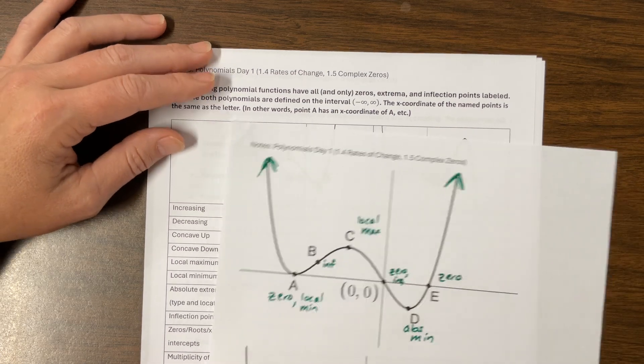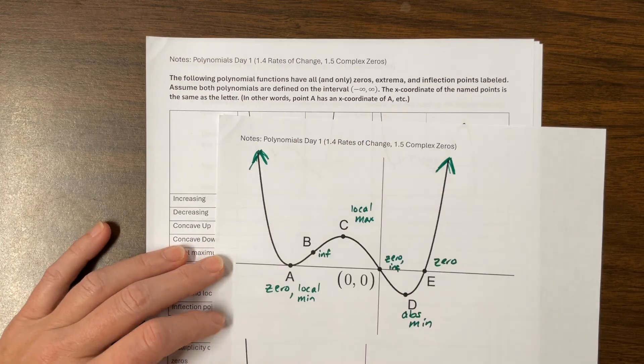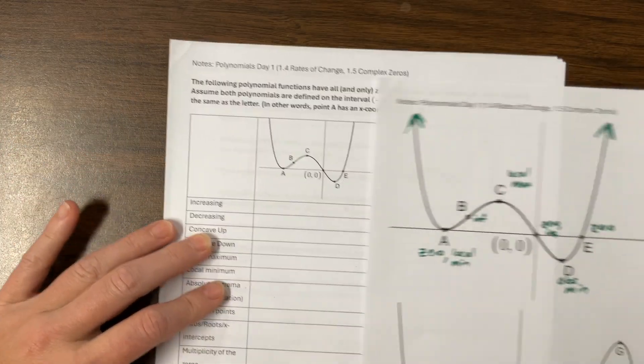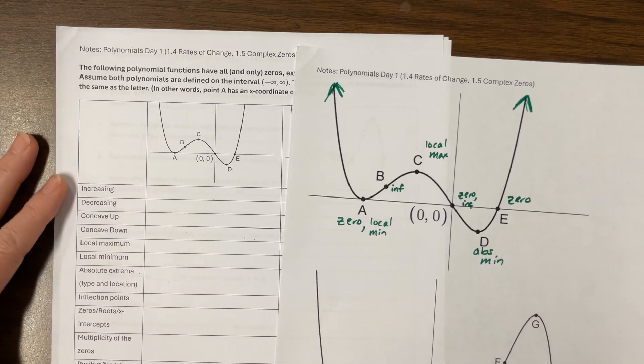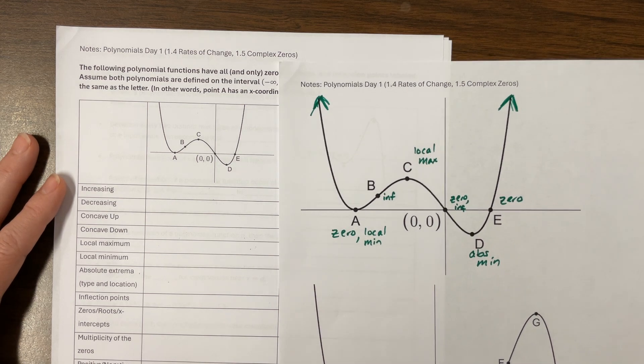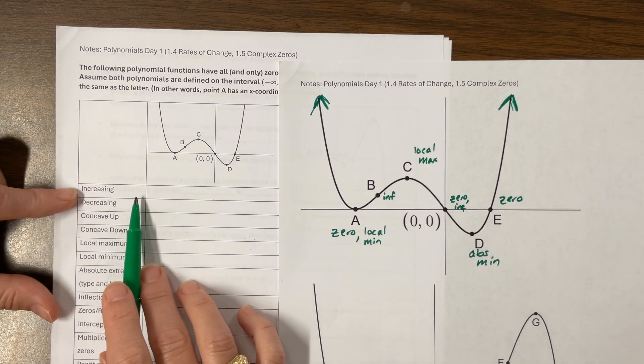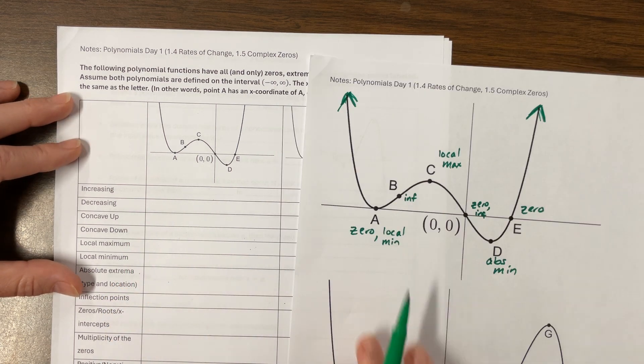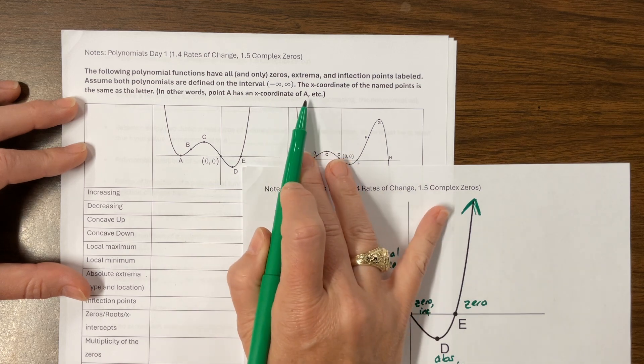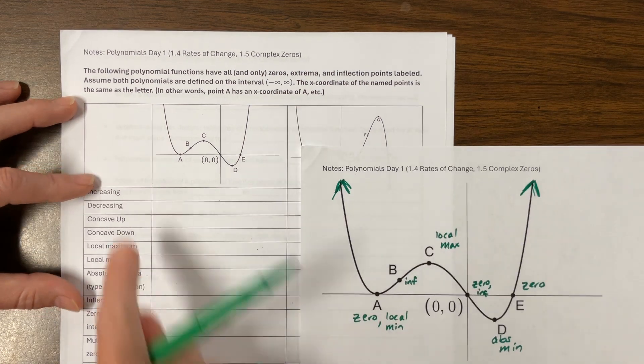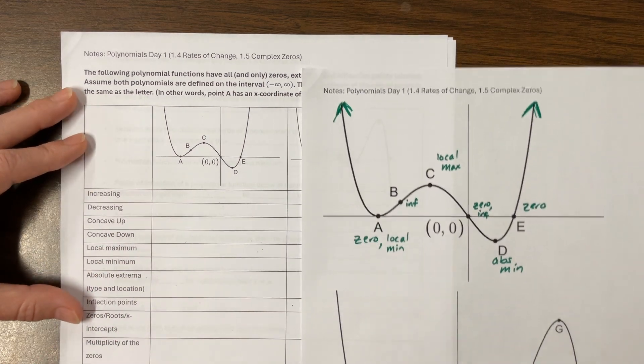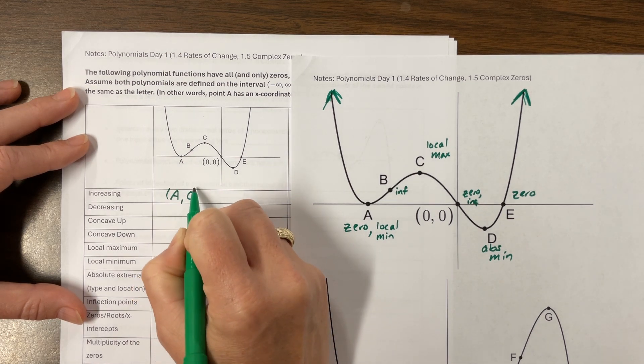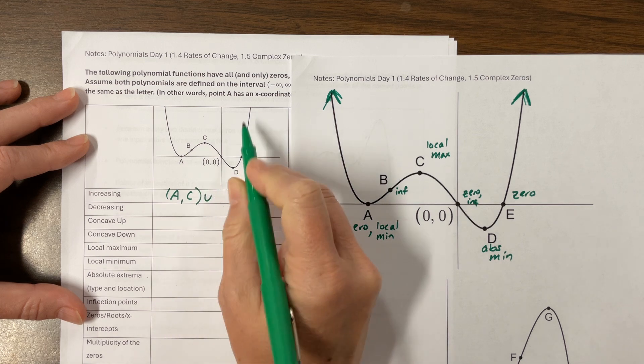That was kind of my thought process behind this graph. And the other one, I thought through it the same way. So now let's start, let's see if you can see both things. So we want to know, where is it increasing? It's increasing on the interval from A to C. And then once again, point A has an x-coordinate of A. So when we do interval notation, we're always using just the x values. And so it's increasing from A to C. It's also increasing again from D to infinity.